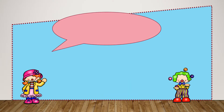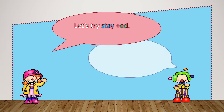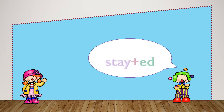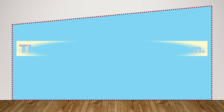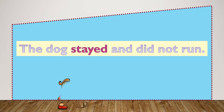Let's try this with the word stay plus the suffix -ed. Here I have a vowel team in my base word, A-Y, so I will leave it as it is and add my suffix -ed. Stayed. The dog stayed and did not run.